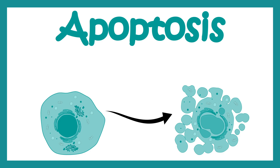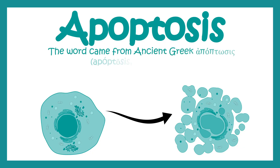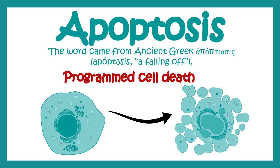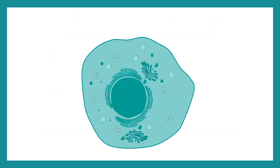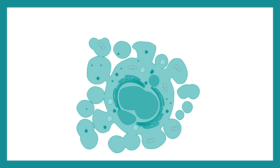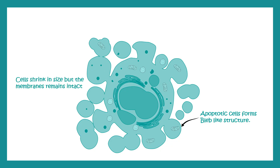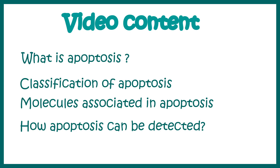In this video we'll talk about apoptosis. The Greek word apoptosis means 'falling off.' Apoptosis is one type of programmed cell death. In apoptosis, cells shrink and form blob-like structures known as apoptotic bodies, with an overall shrinkage of cell size. We'll cover what is apoptosis, classification of apoptosis, molecules associated with apoptosis, and how apoptosis can be detected.